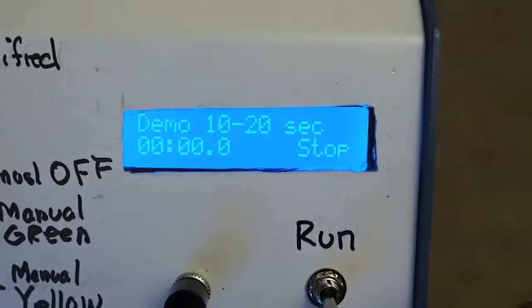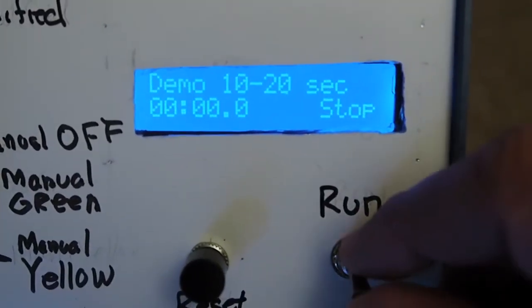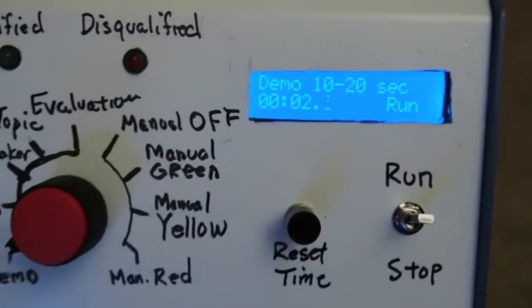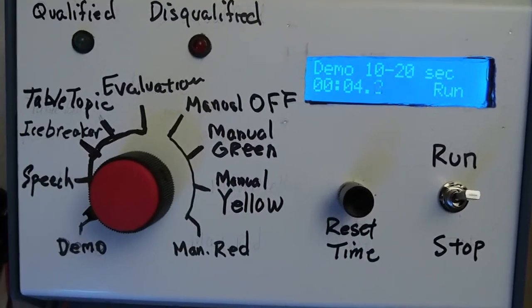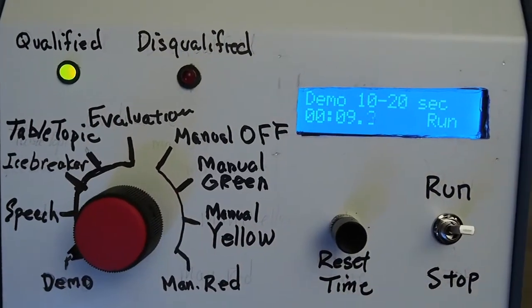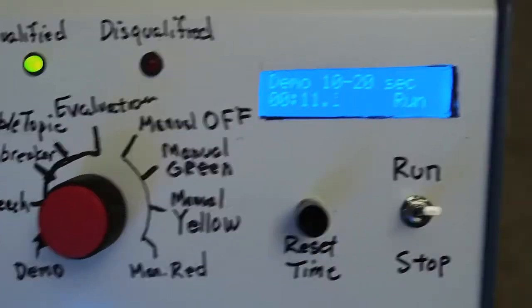The demo mode just counts 10 to 20 seconds. You can see that after five seconds the qualified light goes on because you're within the grace period, and then the green light comes on.